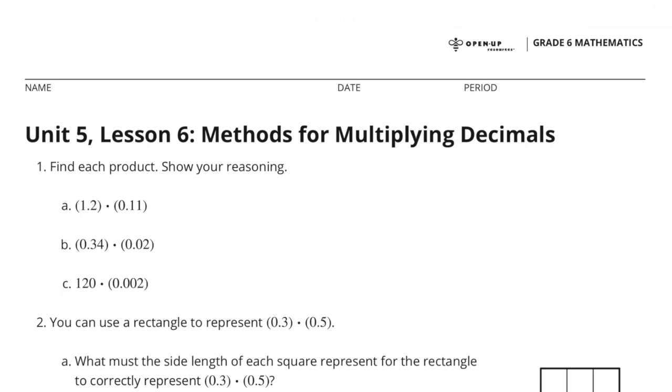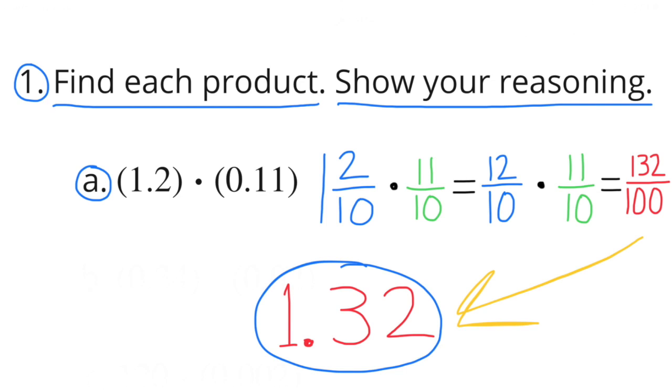Unit 5 Lesson 6, Methods for Multiplying Decimals. Number 1: Find each product, show your reasoning. Part a: 1 and 2 tenths times 11 tenths. That's equivalent to 12 tenths times 11 tenths, which equals 132 hundredths, or 1 and 32 hundredths.